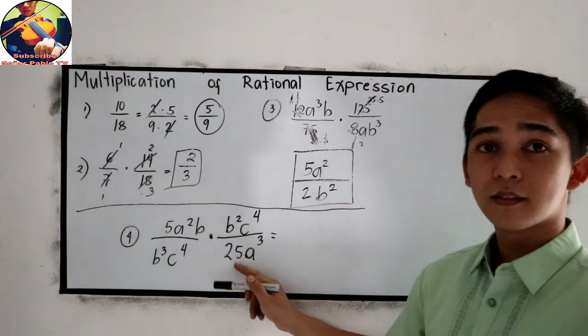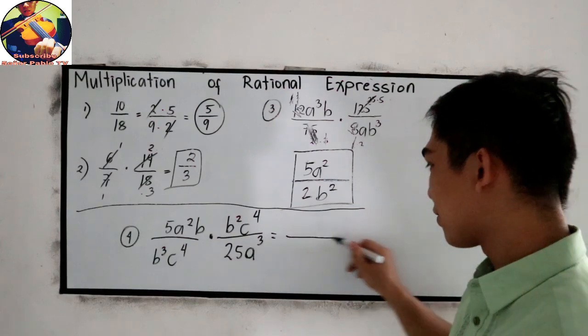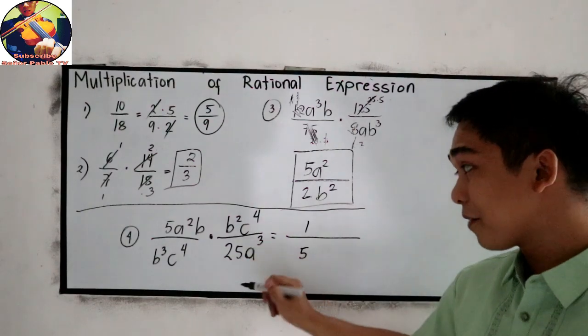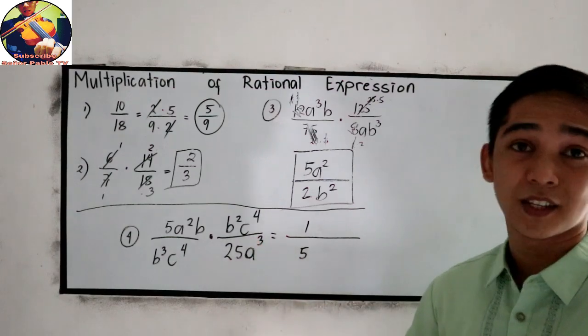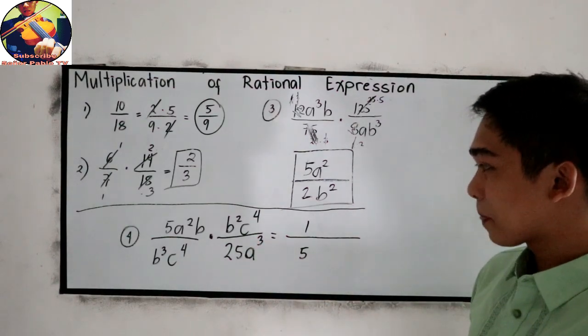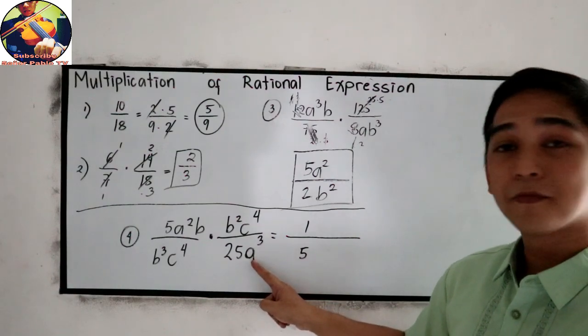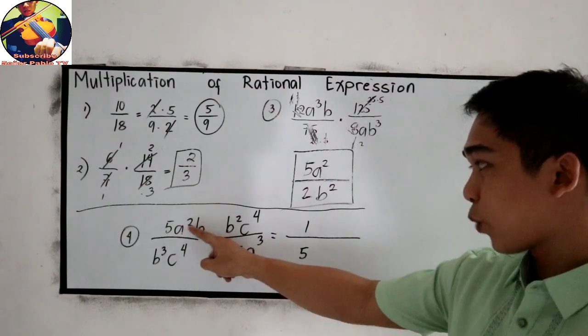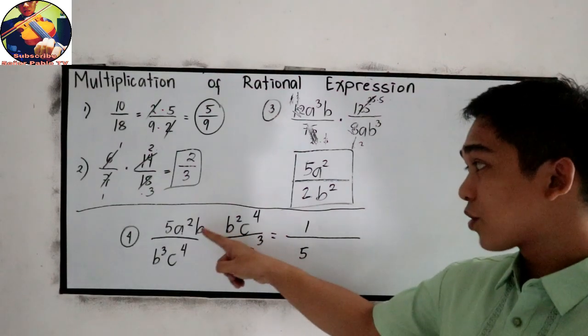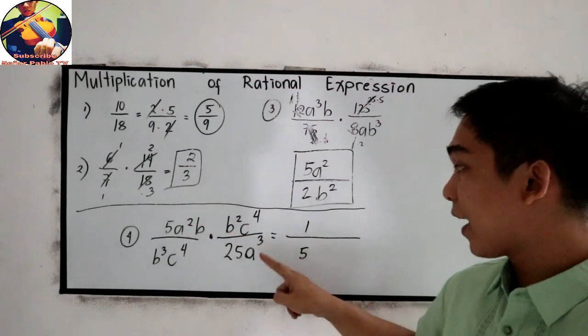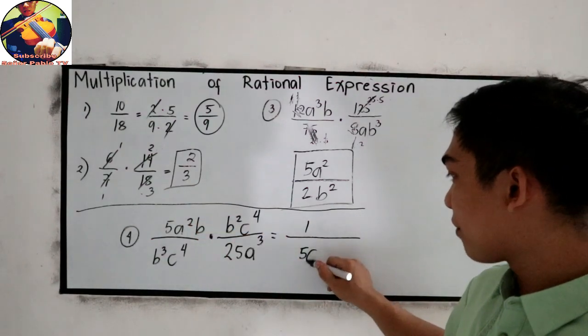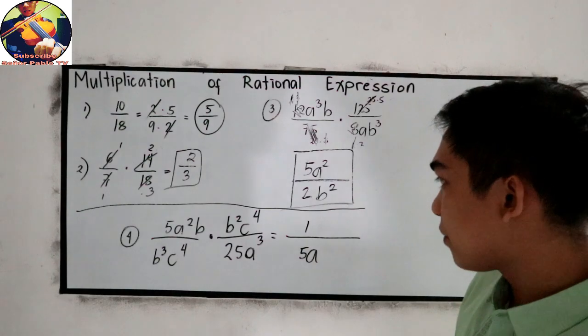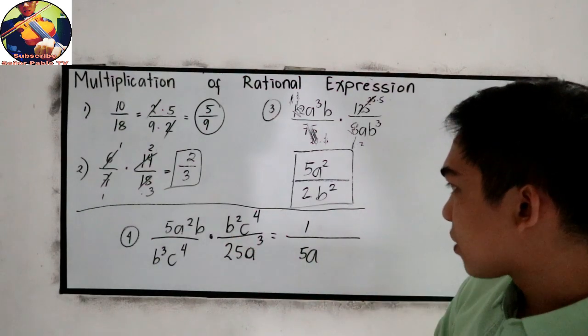5 and 25, common factor is 5. So that will become 1 over 5. Because 25 is 5 times 5, so we can cancel 5 and 5. Next, for our variable. For letter A, squared and cubed. So let us subtract. So if we have 2 up in our numerator and 3 down, we're subtracting, we have A remaining in our denominator.